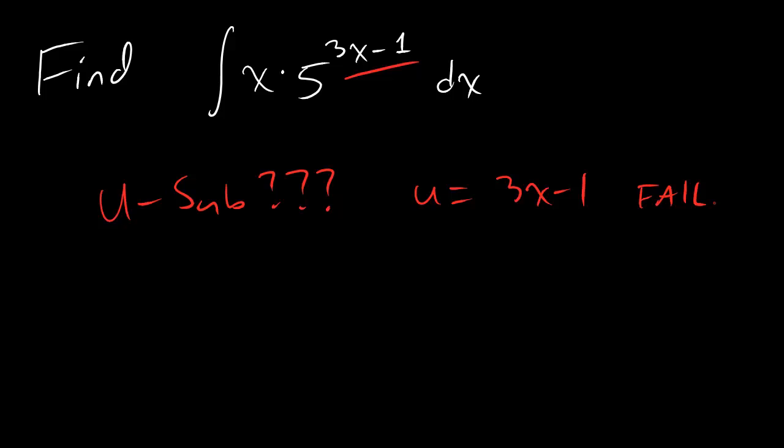So the reason why, by the way, so that you can maybe get an instinct for this besides just working it out and then only seeing at the end that it doesn't work, is that it's true this is the only choice for u that you could have, but whatever you pick for your u, the derivative has to be somewhere else in the equation.